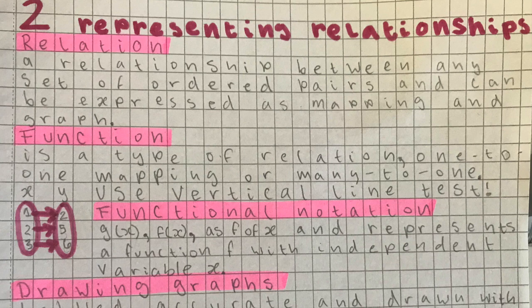A function is a more specific type of relation. It can either be a one-to-one mapping or a many-to-one mapping, but it can't be a many-to-many mapping or a one-to-many mapping. Essentially, the X value always has to lead to only one Y value. However, a Y value can correlate to many X values.